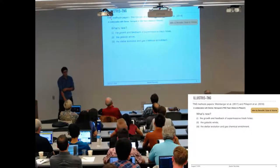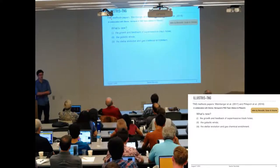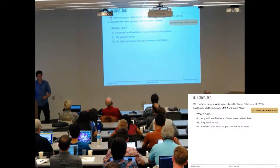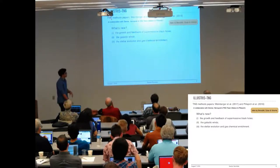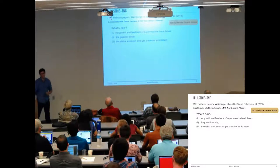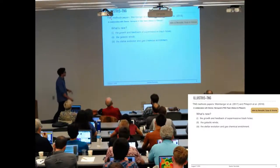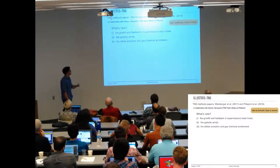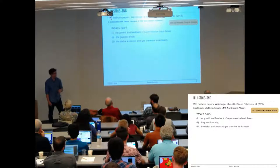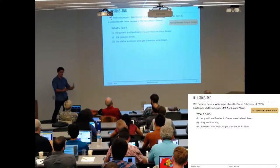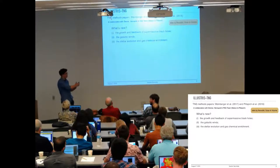To look into this further I turned to the IllustrisTNG simulations, in collaboration with Benedict Diemer and Lars Hernquist at the CfA, as well as the whole TNG team and Annalisa Pillepich who leads this effort. What's new in IllustrisTNG is an implementation of the growth and feedback of supermassive black holes as well as galactic winds, which makes galaxies quench more efficiently at the highest masses, around 10^11 solar masses.